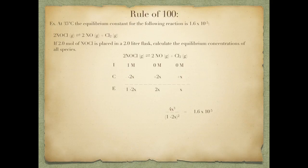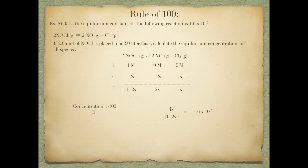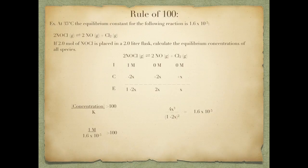Here is where the Rule of 100 comes in. To solve for x you would need to expand 1 minus 2x squared, ending up with x cubed, x squared, x, and a constant — requiring the quadratic formula or another technique. The Rule of 100 says: if your initial concentration divided by your equilibrium constant is greater than 100, you can eliminate that variable. Here, 1 divided by 1.6 times 10 to the negative fifth is much greater than 100, so I can eliminate the 2x, leaving 4x cubed over 1 equals 1.6 times 10 to the negative fifth.